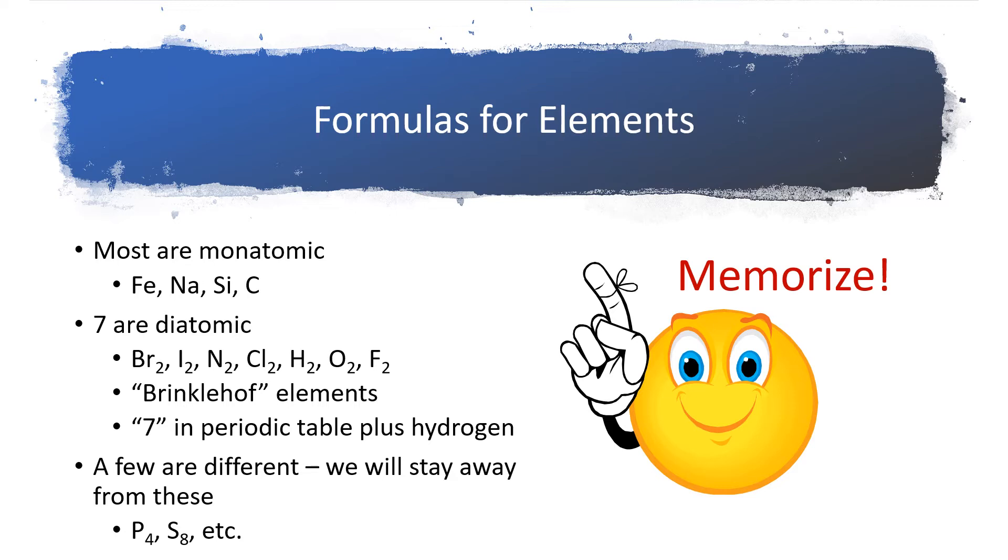And also something I want to point out is that when we're talking about the Brinkelhoffs, the two only goes on the element when it's all by itself. If the element is involved in a compound, then other things will determine what the subscript is, such as the ionic rules or the covalent rules or the alkane rules. The subscript of two goes on these seven elements when it's just by itself, like if we're talking about O2 oxygen gas in the air.